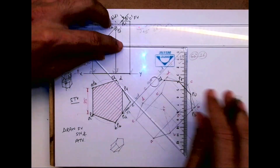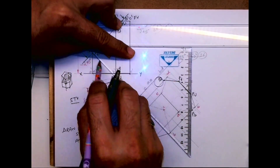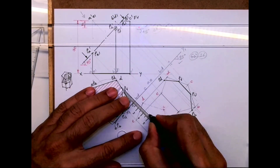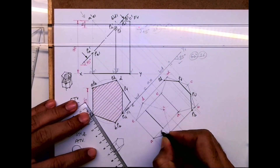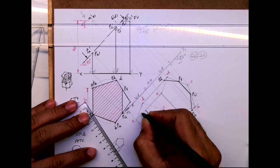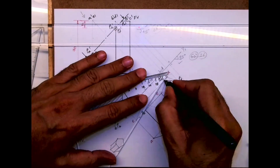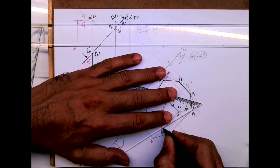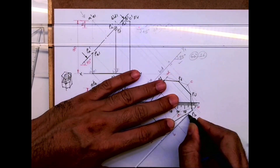This is the top view. Then for PA and PE — project PA dash and PE dash: wherever it cuts on A that is PA, and wherever it cuts on E that is PE. Join all these lines and you'll get the auxiliary section part — this is the auxiliary top view.